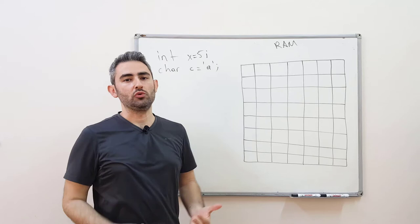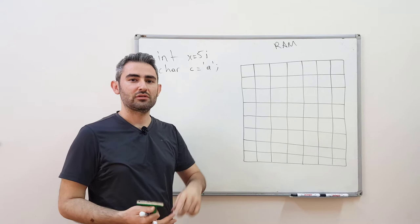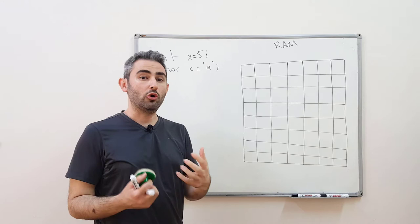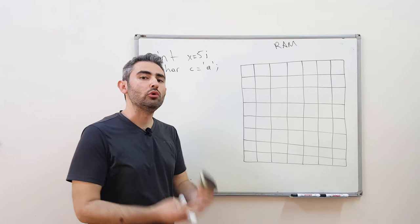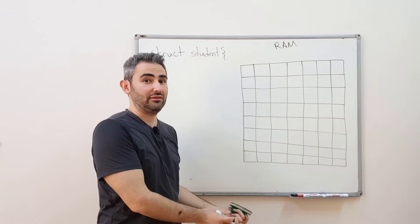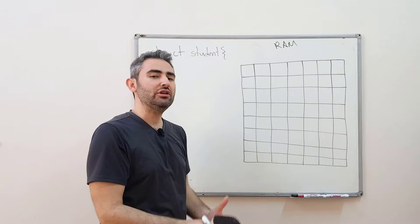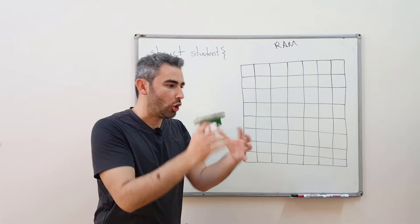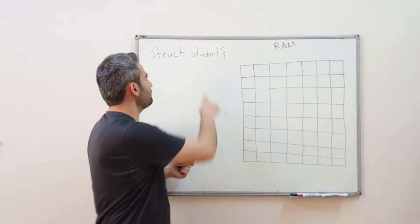Structures are complex data types created by the user. Integers, doubles, and chars are all primitive data types. With structures, you can define your own complex data types by using multiple variables together — you are actually stacking multiple variables into a container. Structs are like packages or containers that hold multiple variables together.